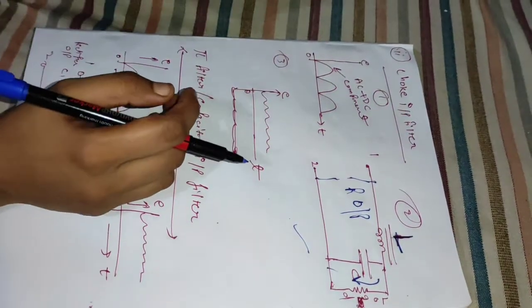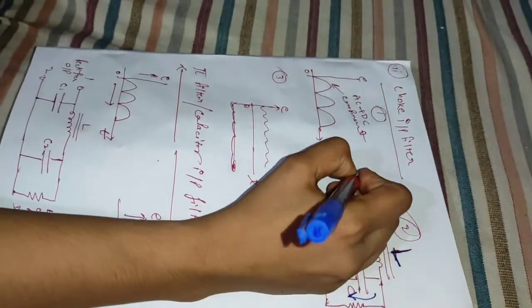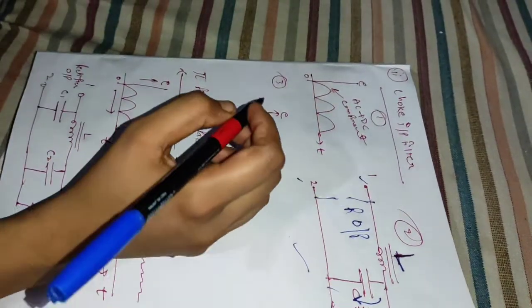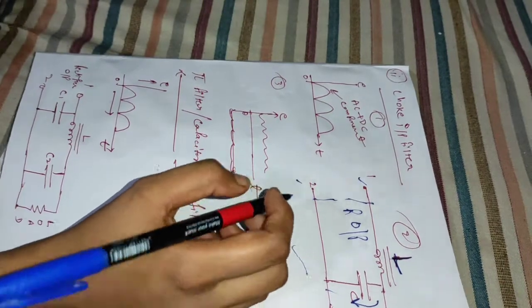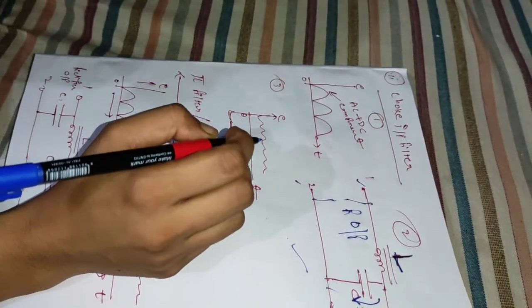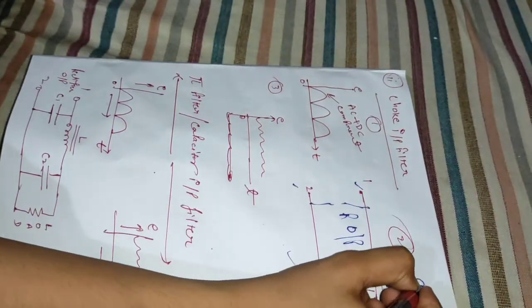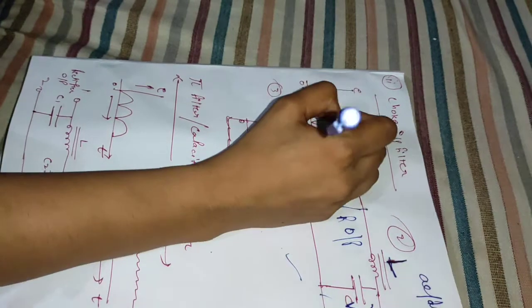The pulsed output of the rectifier is applied across terminals one and two of the filter circuit. The pulsed output of the rectifier contains AC and DC components.